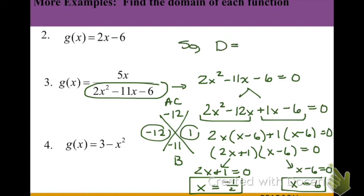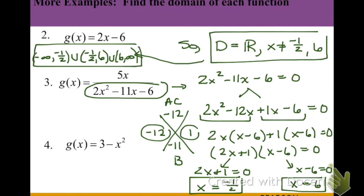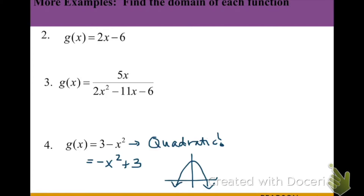Thus our domain is all real numbers except the excluded values of 6 and negative one-half. In interval notation: negative infinity to negative one-half, union negative one-half to 6, union 6 to infinity — notice all parentheses. Our next example has highest degree 2, which we can rewrite as negative x squared plus 3. The negative a flips it over the x-axis and the plus 3 moves it up, but neither transformation affects the domain, so the domain is all real numbers.